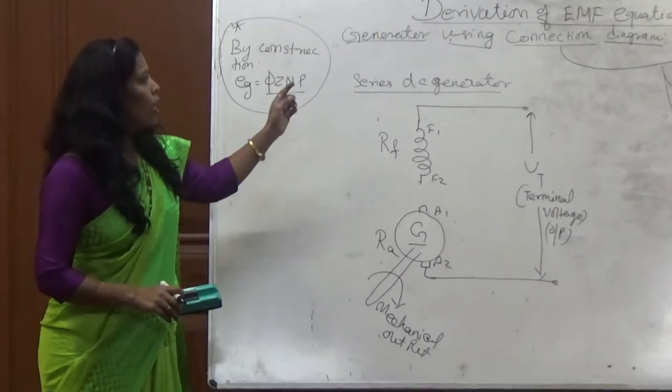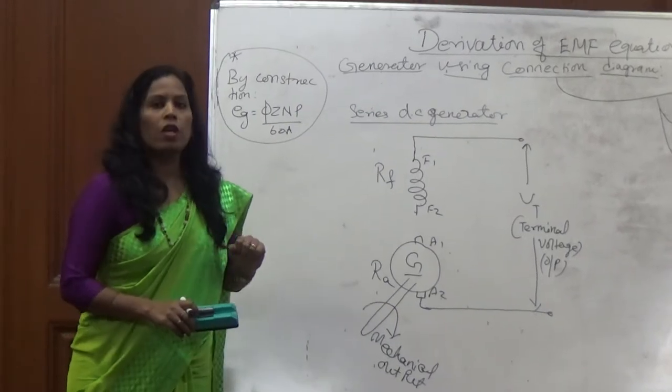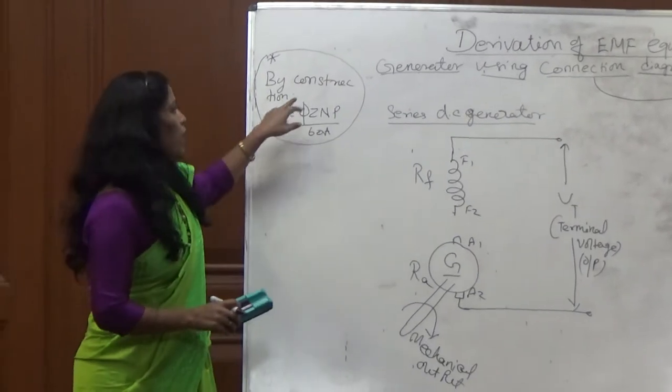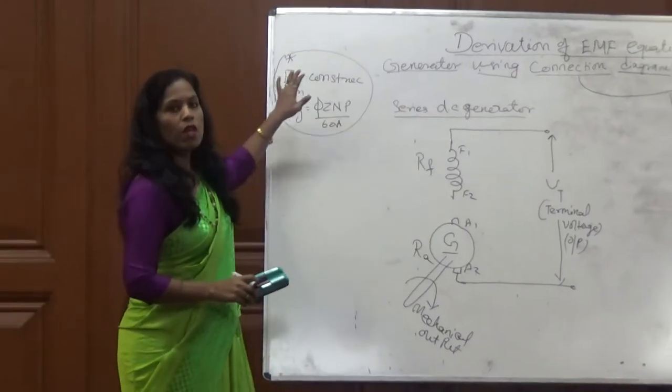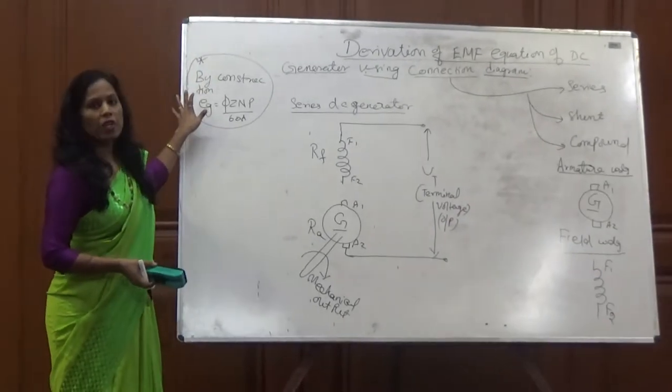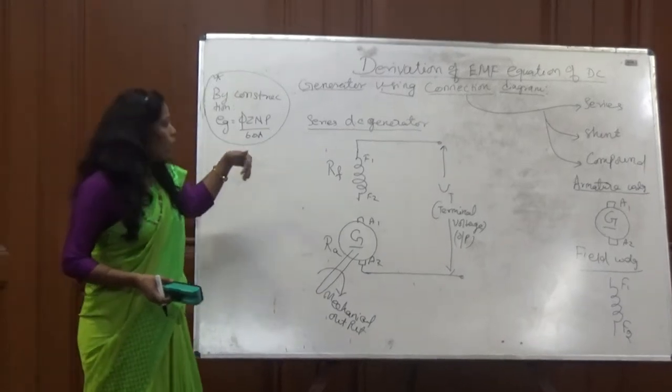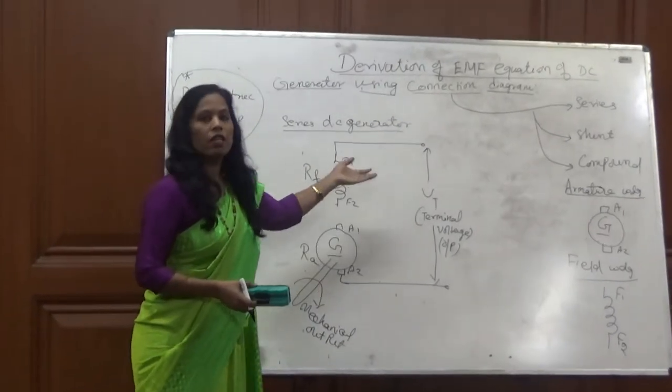Today I am going to tell you how to derive V1 equation using connection diagram. First of all, you must already know that by construction we can derive V1 equation, that is 500m by 68. Now we are going to derive using connection diagram.